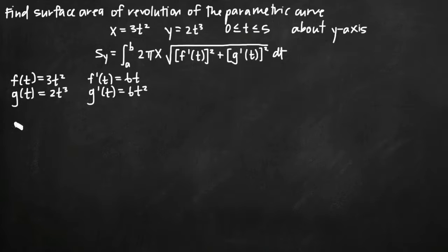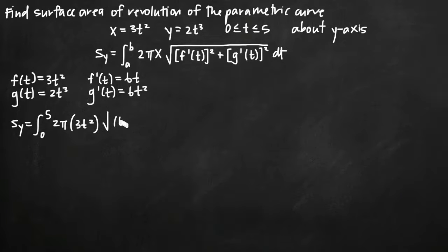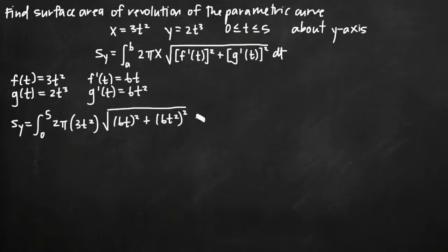Now we can plug those in and start working with our integral. We'll have the integral from 0 to 5 of 2π times x, which is 3t squared, times the square root of f'(t) squared plus g'(t) squared — that is, 6t squared plus (6t squared) squared — all under the square root, dt.